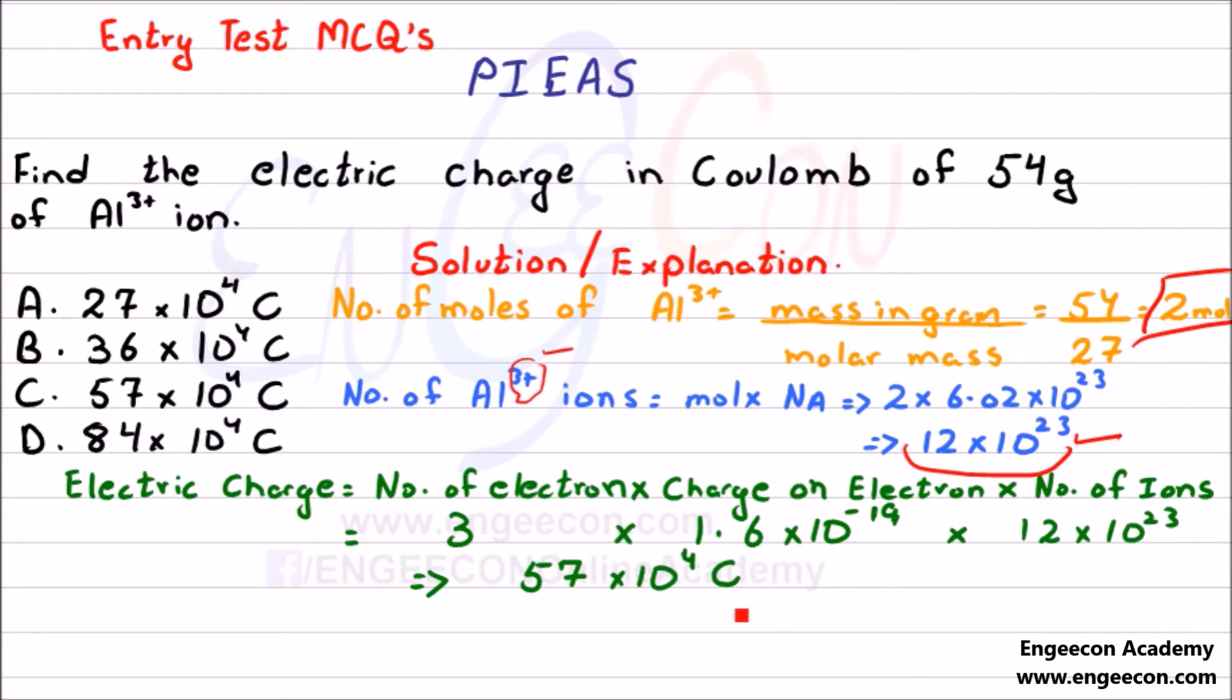You can speed up this calculation by assuming 1.6 equals 1.5, as 3 × 1.5 = 4.5, and 4.5 × 12 = 54. 4 × 12 = 48 plus 6 = 54. This 54 is close to 57, so C is the right answer.